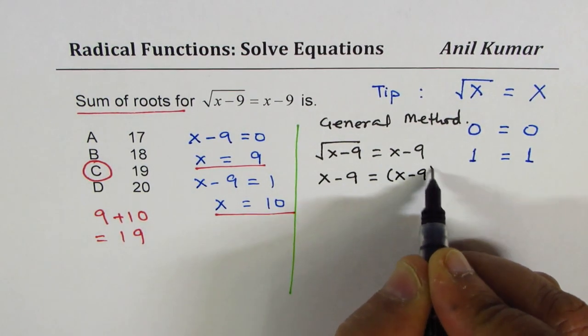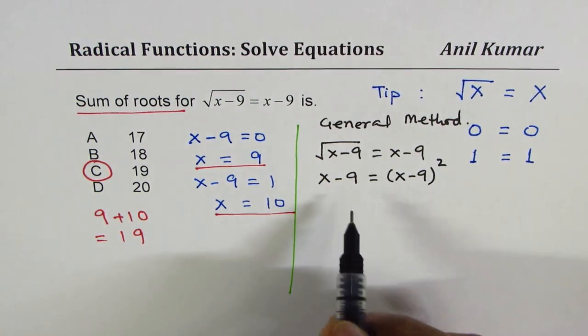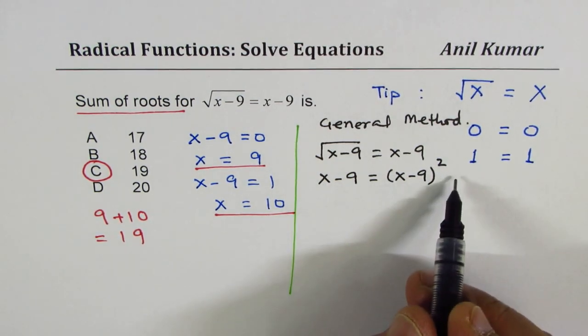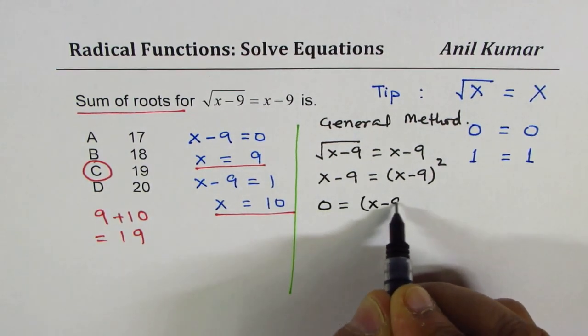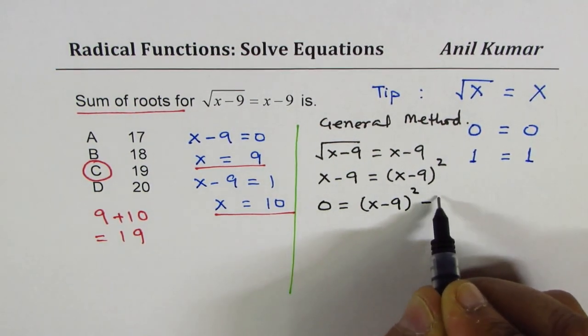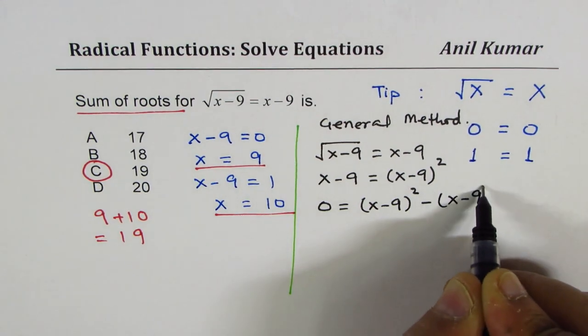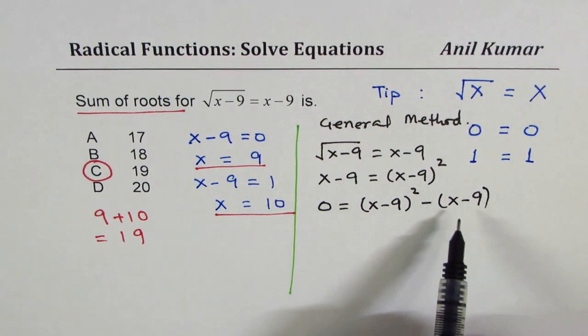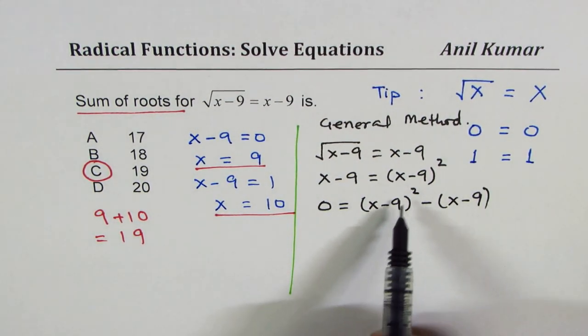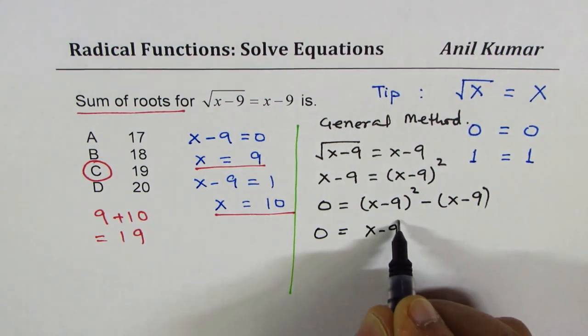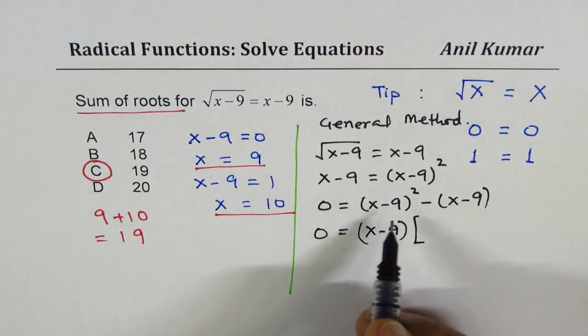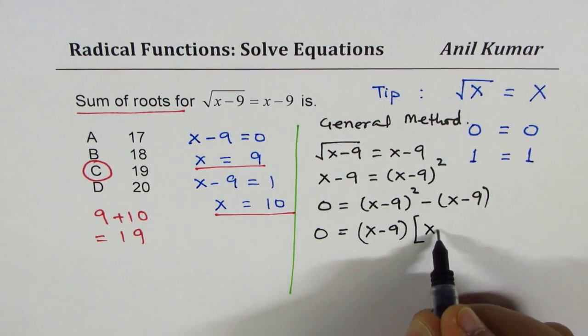Now bringing this to the right side, we get 0 equals x minus 9 whole square minus x minus 9. Look here, in this solution I have not expanded, rather I am factoring it out. So I'm writing this as x minus 9 as a common factor.